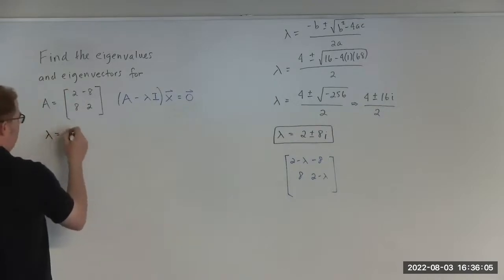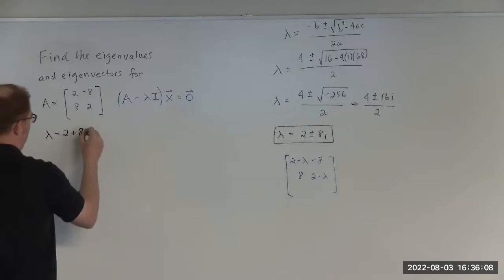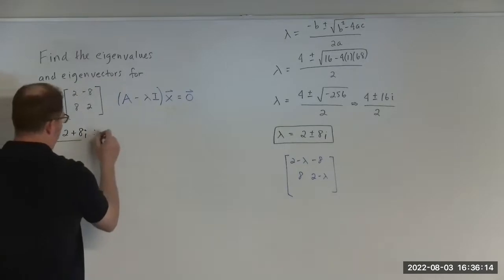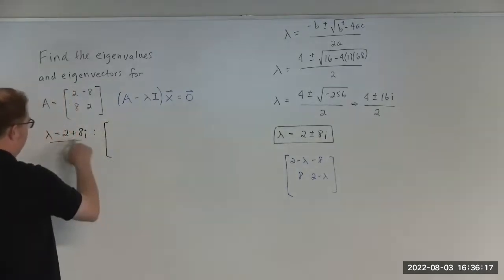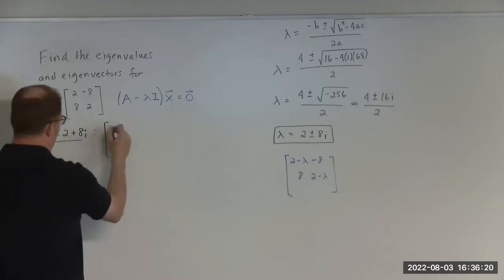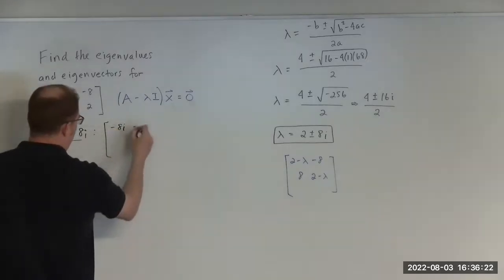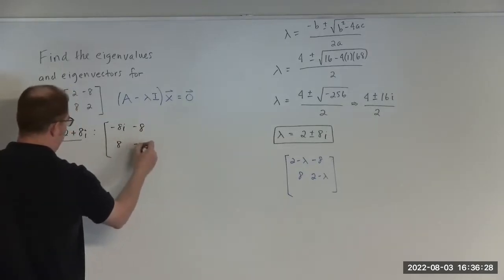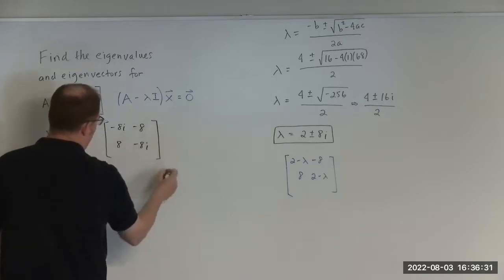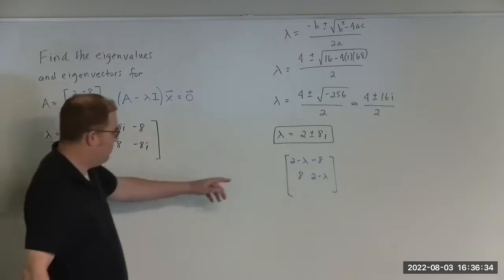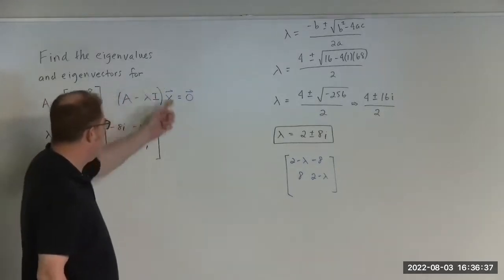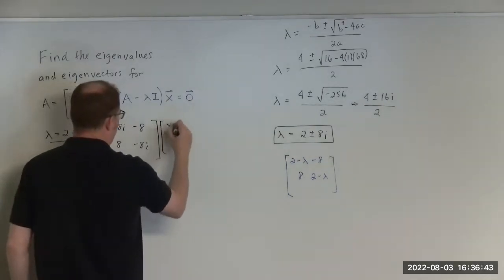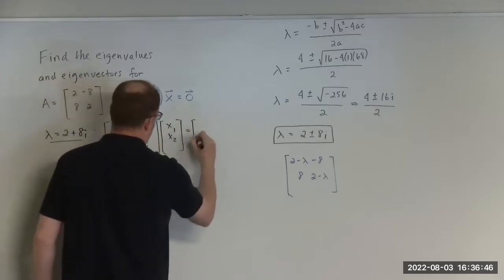We're going to let lambda equal 2 + 8i and plug it back into the matrix A − λI. We have 2 minus (2 + 8i), so 2 minus 2 is 0, and then minus 8i. Then we have −8 and 8, and again 2 minus lambda, which gives us minus 8i. This is the coefficient matrix for the homogeneous system with x₁ and x₂ equal to the zero vector.